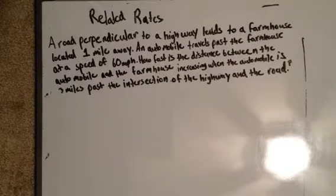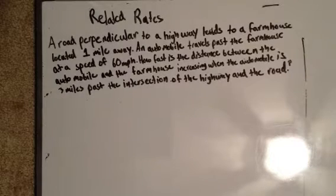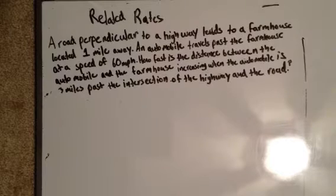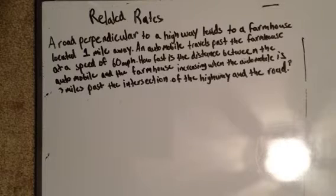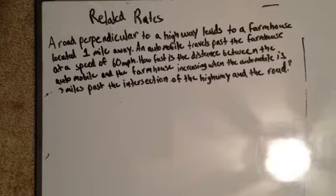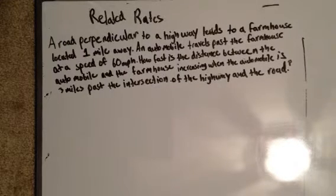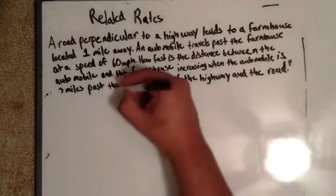In this example we're going to be going over related rates using a problem that's a bit harder. It says: a road perpendicular to a highway leads to a farmhouse located one mile away. An automobile travels past the farmhouse at a speed of 60 miles per hour. How fast is the distance between the automobile and the farmhouse increasing when the automobile is three miles past the intersection of the highway and the road?